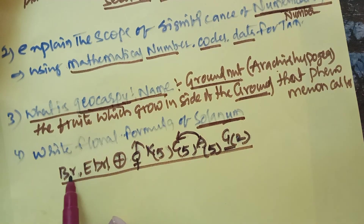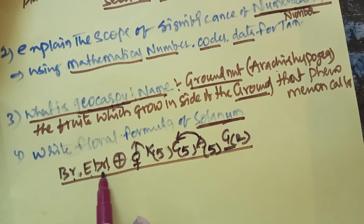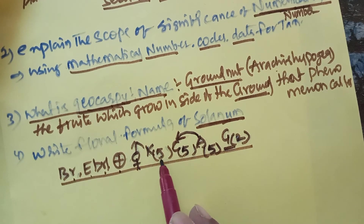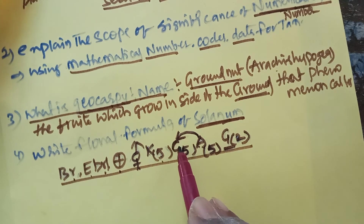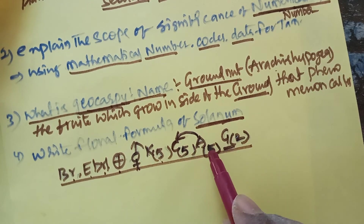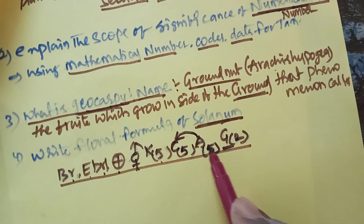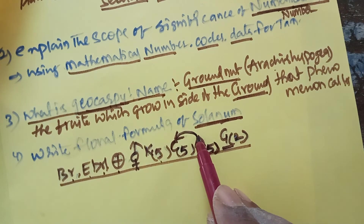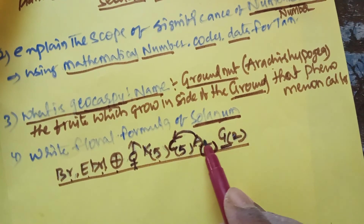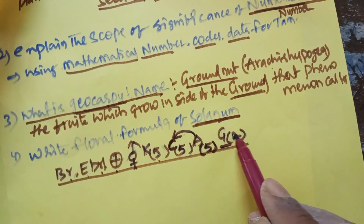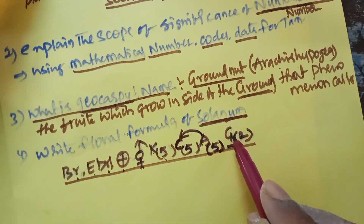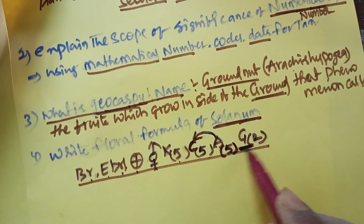In Solanaceae family, the flower is bracteate and ebracteolate, actinomorphic, bisexual. The calyx has five sepals which are fused, called gamosepalous. The corolla has five petals also fused, called gamopetalous. The androecium has five stamens fused with each other and also fused with the corolla, called epipetalous. The gynoecium has two carpels fused, called syncarpous, and the ovary is superior, represented by a line below the G.